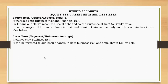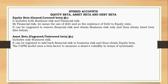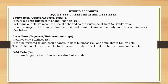The CAPM model uses a beta factor to measure share volatility. Regarding debt beta, there is not much concern here because it is usually very low. For this reason it is usually ignored. Debt beta has a low value and is much lower compared to equity beta, so it is typically set to zero.